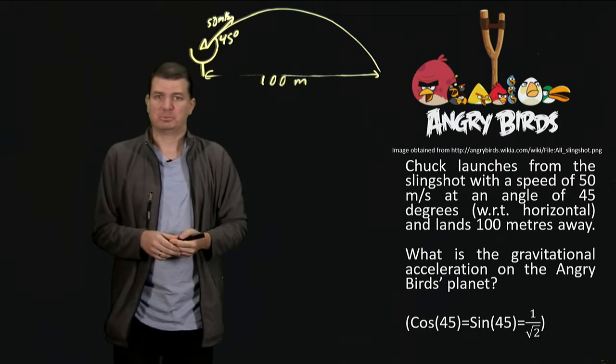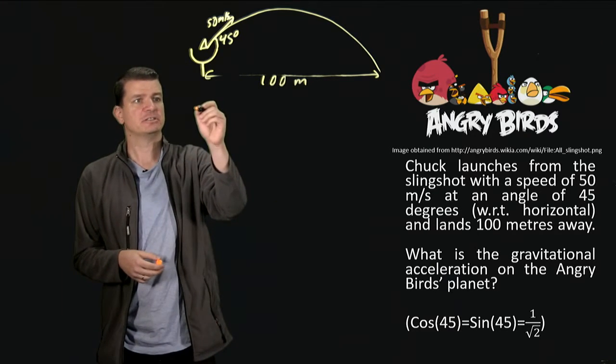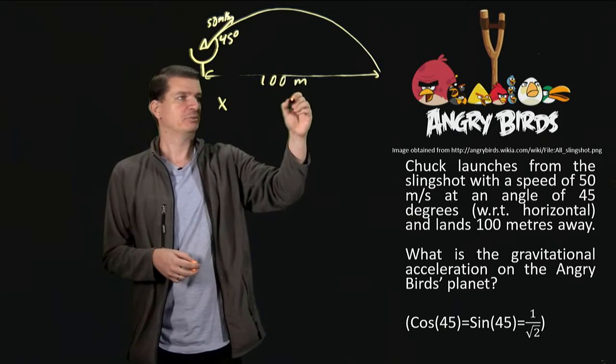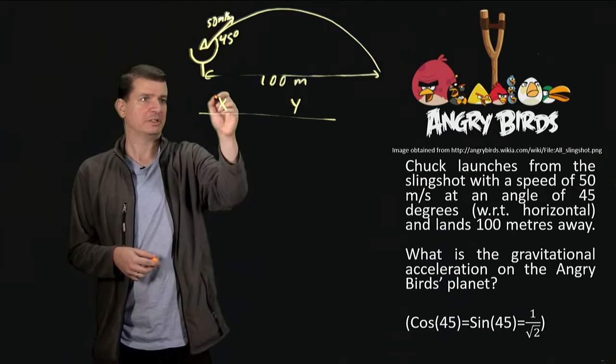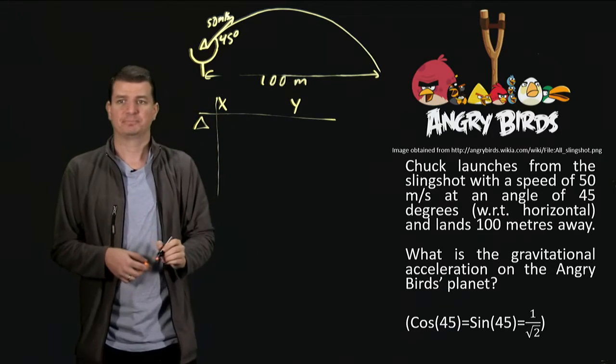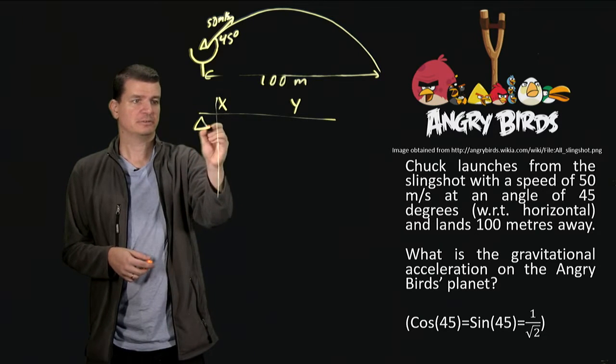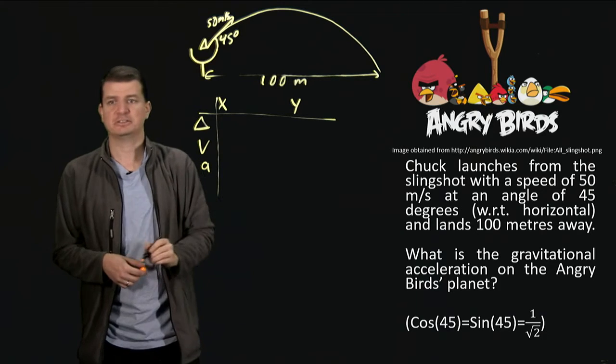Since we've got projectile motion, the first thing we should do is take a look at each direction separately. So we'll think about the x direction, we'll think about the y direction, and we'll think about a few different quantities in each of those, so we'll think about a displacement, we'll think about a velocity, and we'll think about an acceleration in each of those directions.